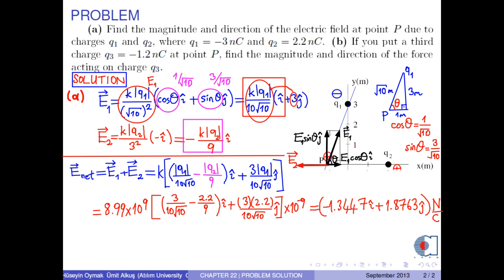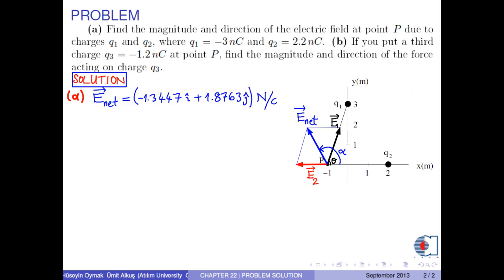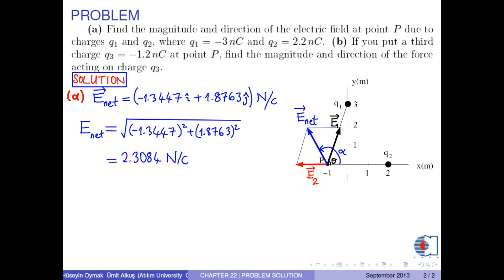Geometrically it can be shown as follows. The magnitude is found by the formula, and it is calculated to be 2.3084 newtons per coulomb. In three significant digits, it is 2.31 newtons per coulomb.